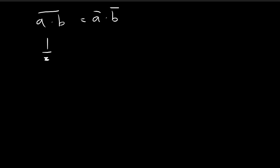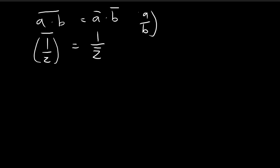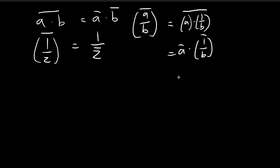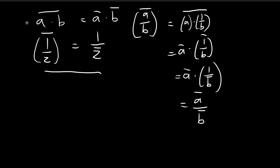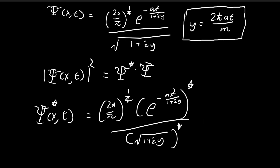If you have 1 over z, where z is a complex number, and you take the conjugate, the result is 1 over the conjugate of z. So for a divided by b, the conjugate is just the conjugate of a divided by the conjugate of b. This is why the conjugate of the wave function equals the conjugate of the numerator divided by the conjugate of the denominator.